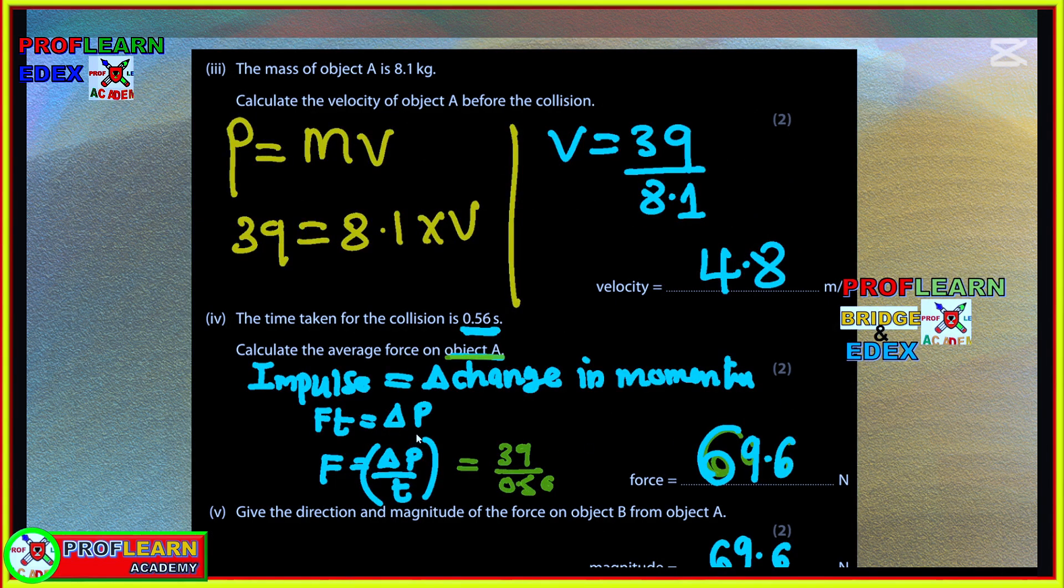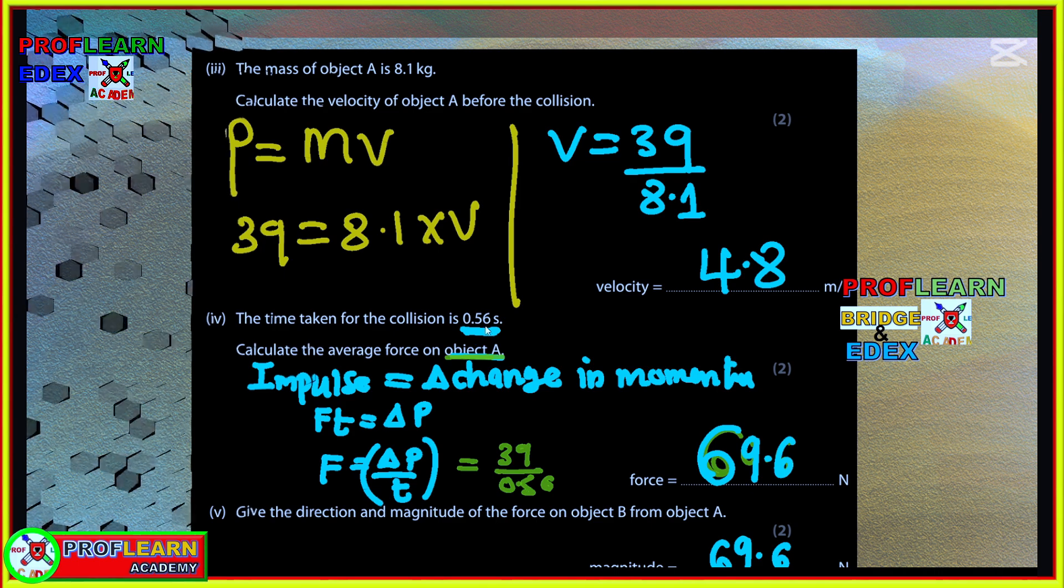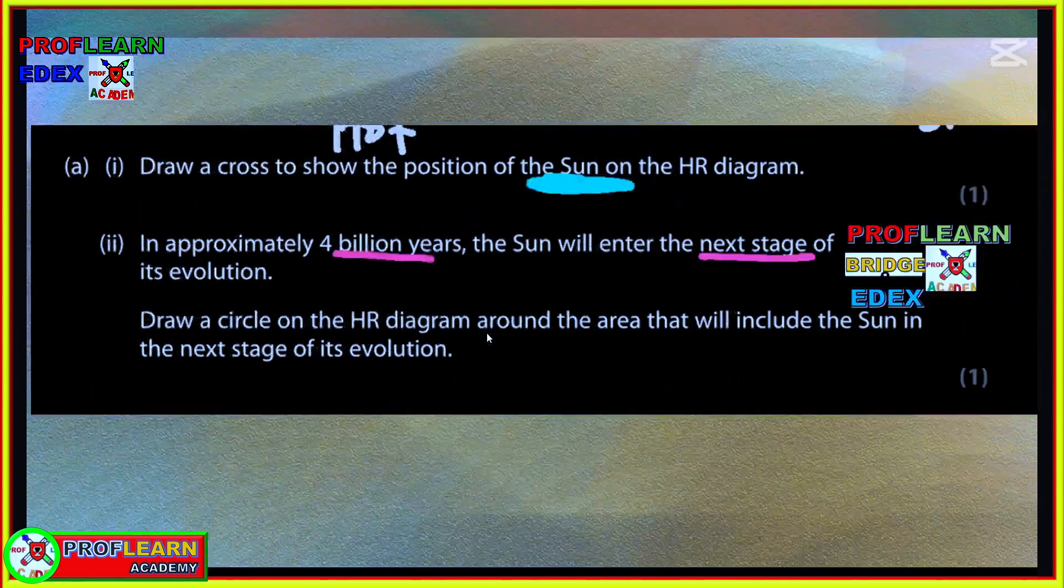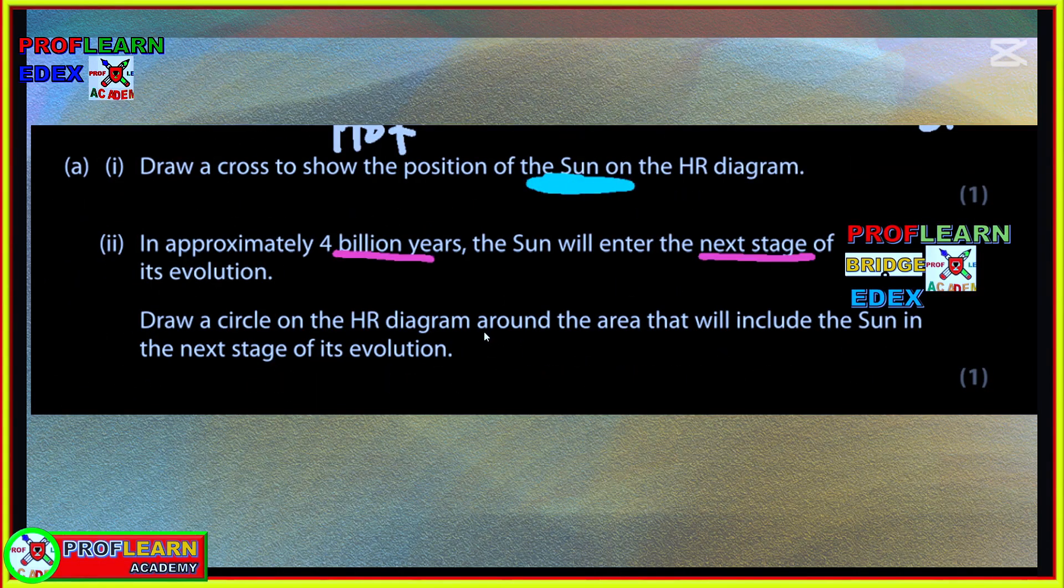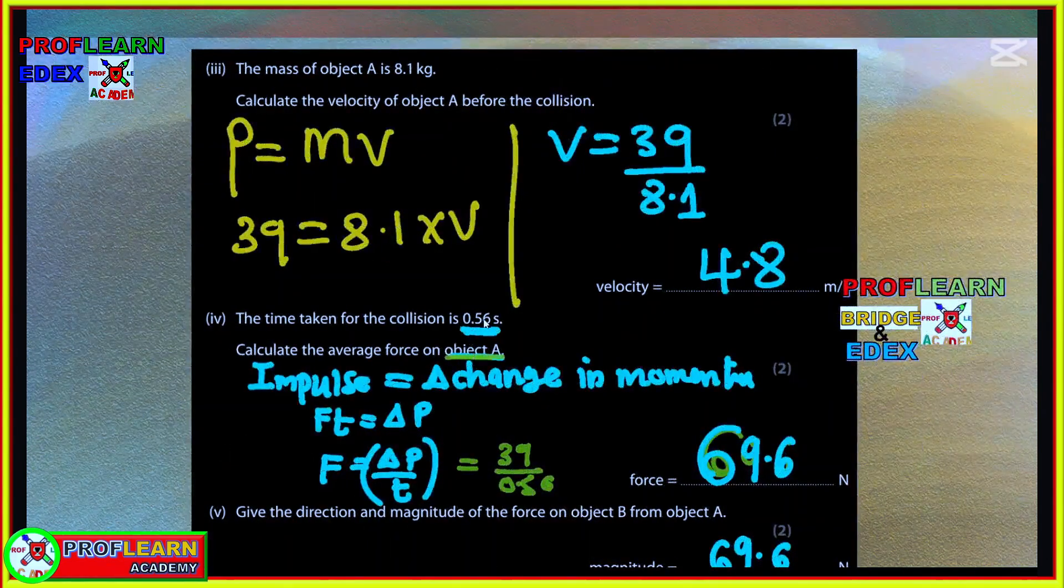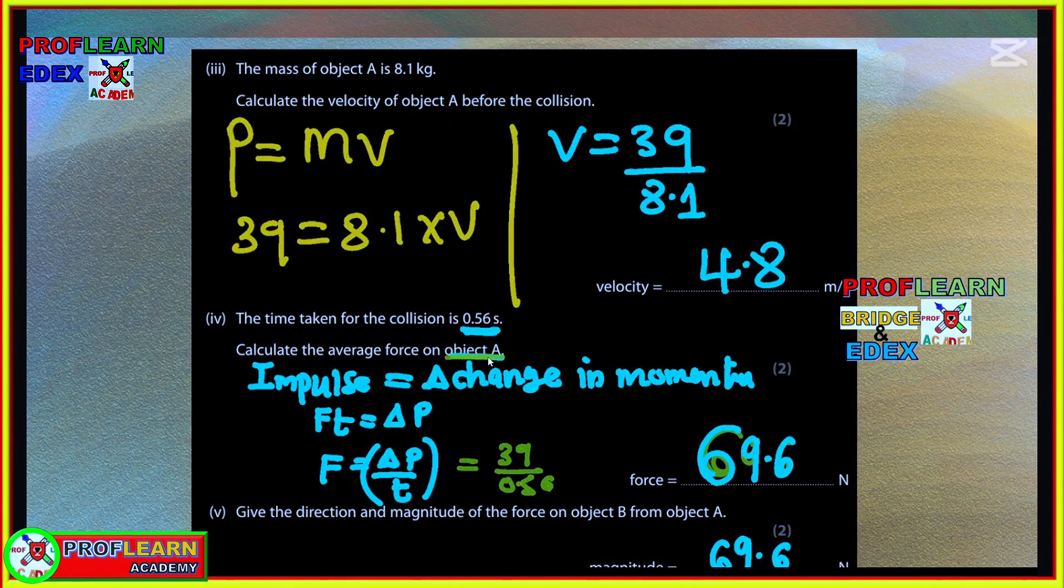State the magnitude and momentum of B before collision. That would be negative 39 kg·m/s because it was moving in the opposite direction, and the momentum will cancel out and they will stop. State the formula linking momentum, mass and velocity: momentum = mass × velocity. Calculate the velocity of A before collision. Before collision it had a momentum of 39, its mass is 8.1. Divide both sides and we get 4.8. The time taken for collision is 0.56 seconds.